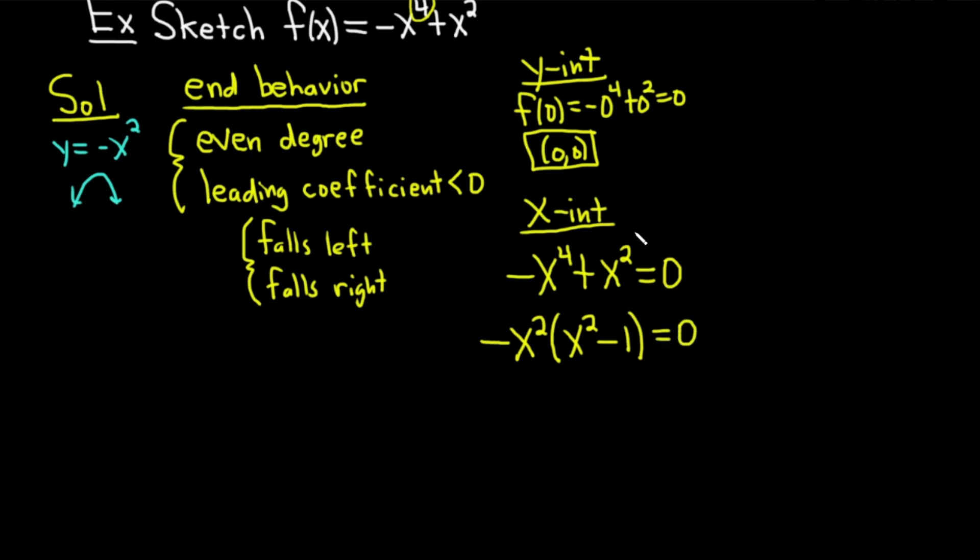But this factors further, and it's really important that you factor fully when you're doing this type of problem. So this is negative x squared. And this is a really easy factorization. This is just the difference of squares. So it's x minus 1, x plus 1. And it's equal to 0.